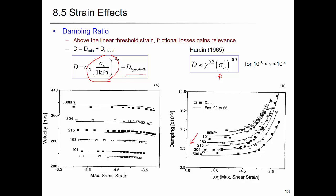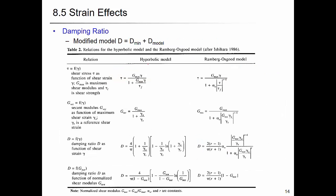This formula can be used to fit experimental data, and there are several models available including the hyperbolic model and the Ramberg-Osgood model to see the effect of strain on shear stress, shear stiffness, and damping ratio. This is also covered in the textbook.